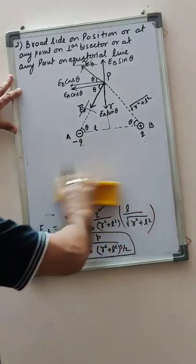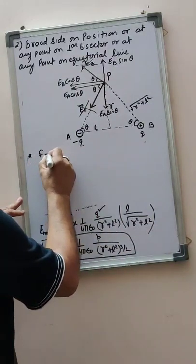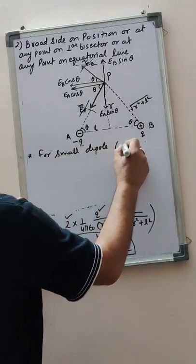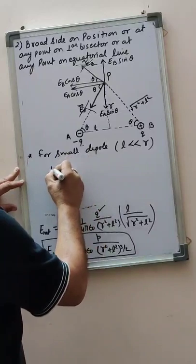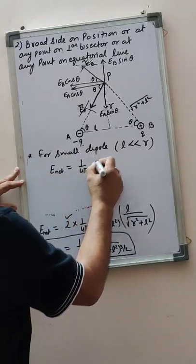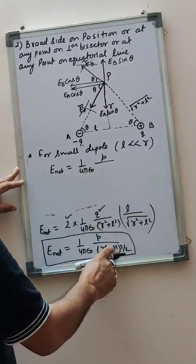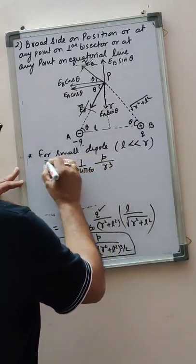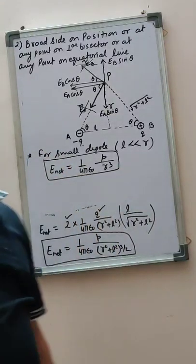If in the question you are given a small dipole, for a small dipole L is much less than R, so you neglect L square. The net field then becomes 1 by 4 pi epsilon naught, P upon R cube. This is the net electric field in broadside-on position due to a small dipole.